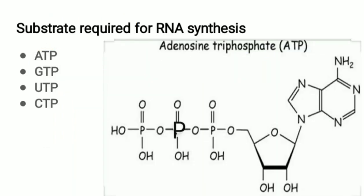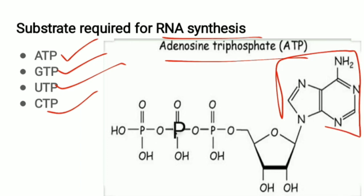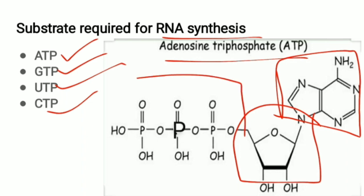Now let's see the substrates required for RNA synthesis. Since RNA is basically a ribonucleotide, the substrates are obviously nucleotides — ATP, GTP, UTP, and CTP. In the structure of ATP, a nitrogen base is linked to a sugar to form a nucleoside, and this nucleoside is in turn linked to a phosphate to form a nucleotide.